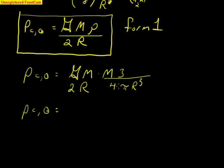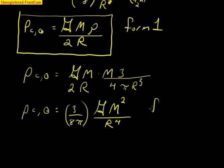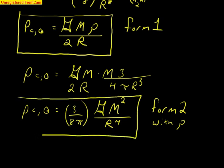This is equal to, this gives you 3 8ths, 3 over 8 pi, let's put that out front, times our gravitational constant, times the mass squared, all of that over, we have r to the 4th. Okay, and this is our form 2 of our equation, which is without density. And that should cover that slide.